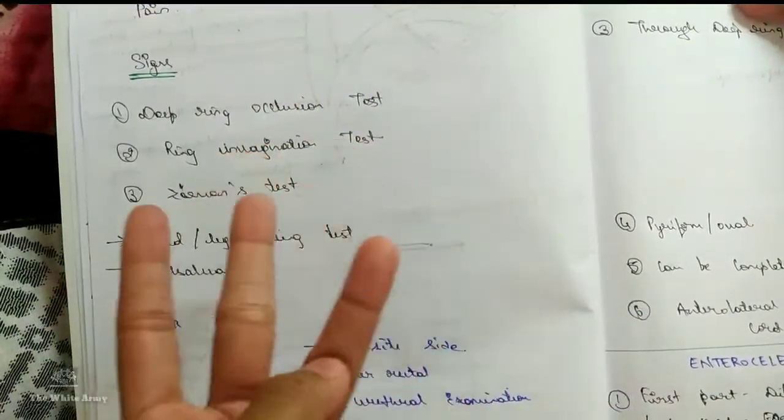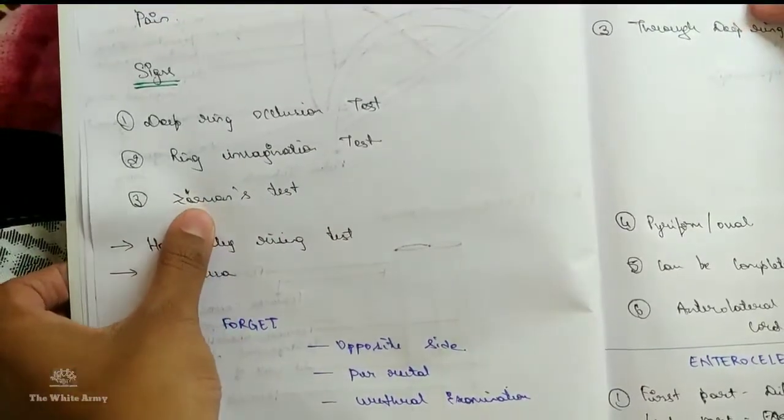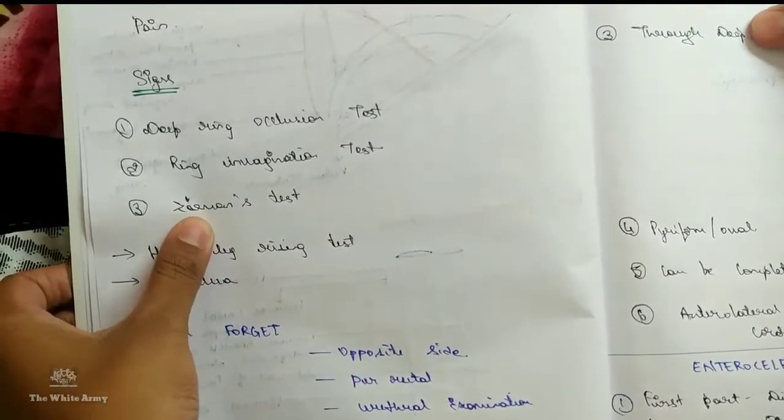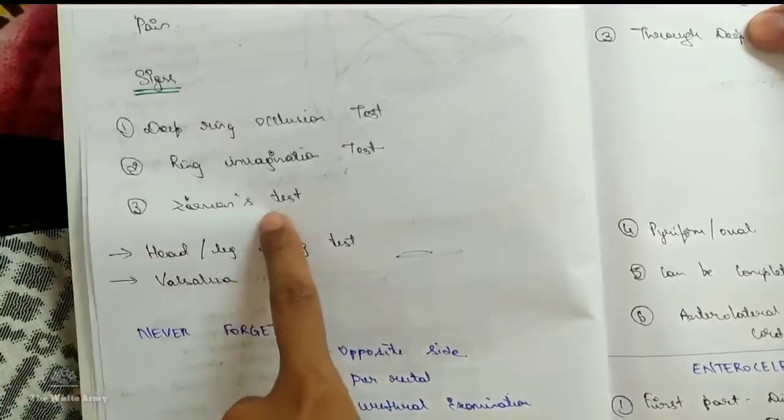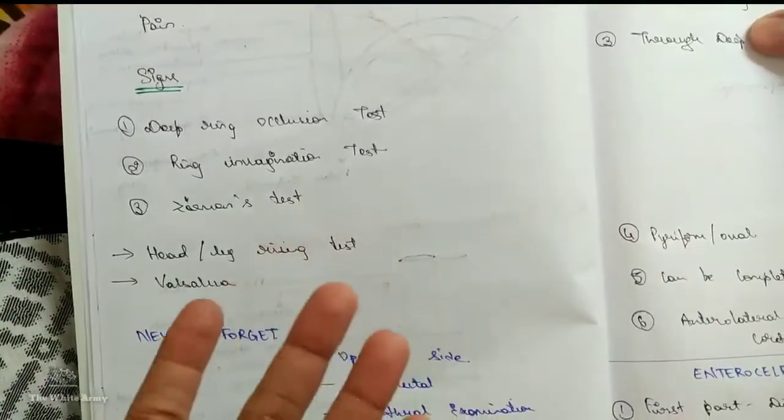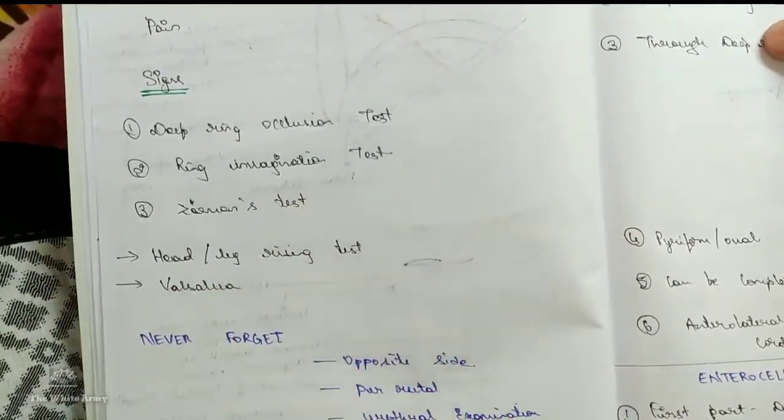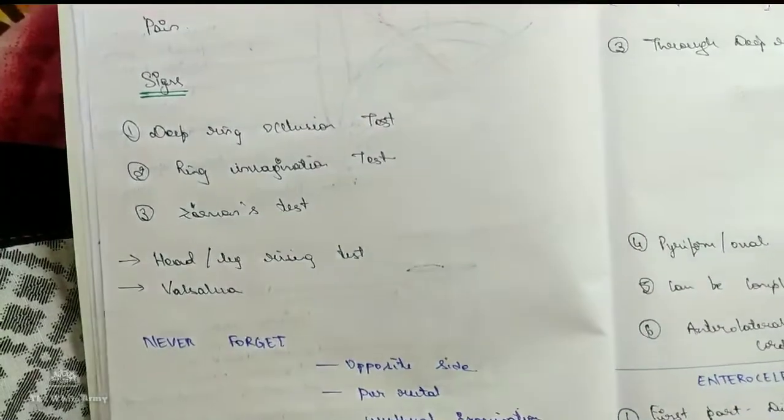Zieman test using your three fingers: index, middle and ring finger. Index finger is used to occlude deep ring. Middle finger is used to occlude superficial ring. And ring finger is used to occlude saphenous opening.